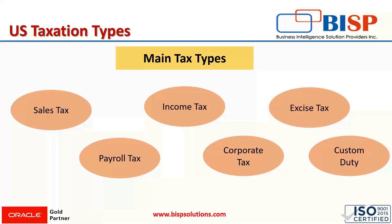Many types of taxes are levied in the United States, but we will be discussing only the common and main tax types. The first tax type is sales tax. Sales taxes are imposed on the sale or lease of goods and assets. There is no national sales tax in the US, and that's why there is no standard rate for it. Since sales tax is governed at the state level, the tax rate varies from state to state and within the state as well.